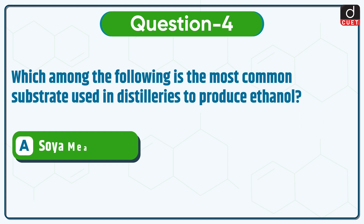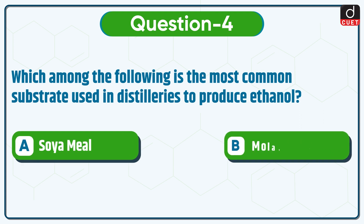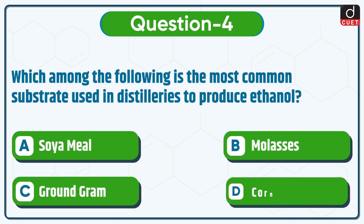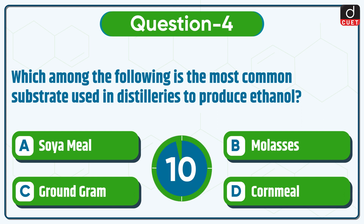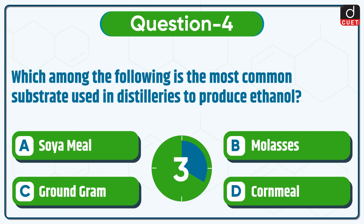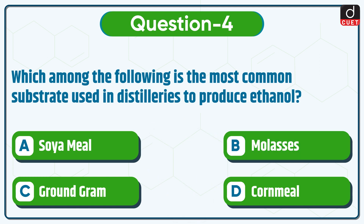Next question: which among the following is the most common substrate used in distilleries to produce ethanol? Soya meal, Molasses, Ground gram, or Corn meal? The correct answer is option B, Molasses.